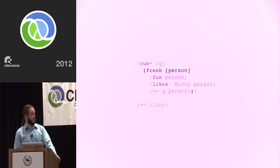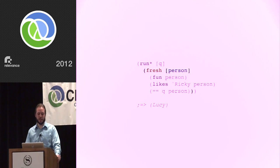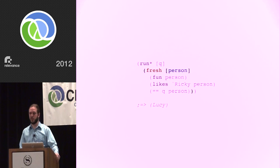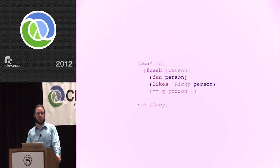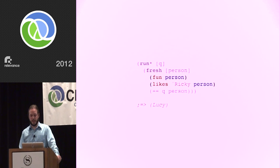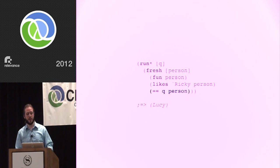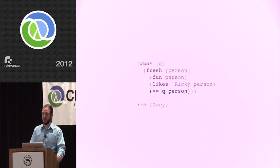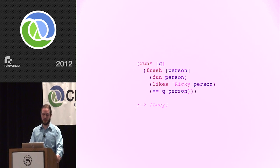Going next, we set up nicely named fresh logic variables—in this case 'person.' Then we ask things about that person. The two assertions I want to make are: is the person fun, and is the person liked by Ricky? Because these are side by side with no other control structures, they are conjunctive—an 'and' relationship. Both must be true for the whole run to succeed. Finally, if those two things hold, we take the person found by that logic run and bind it to Q, which becomes the return value back to our regular functional programming space. The only person who satisfies all those constraints is Lucy. We get back a sequence—because we can have zero, one, or more than one answer—and Lucy is the single answer.